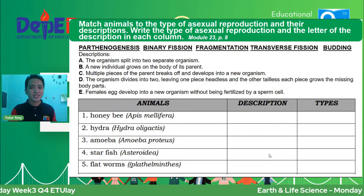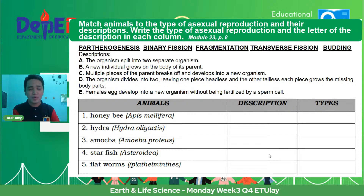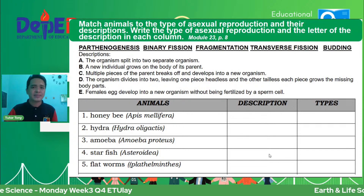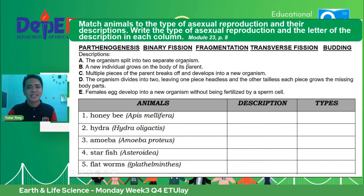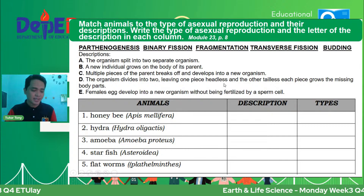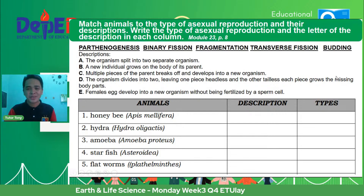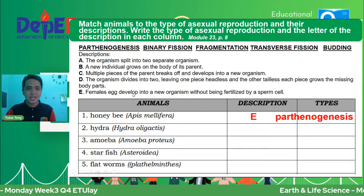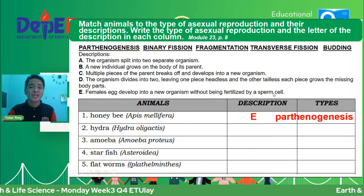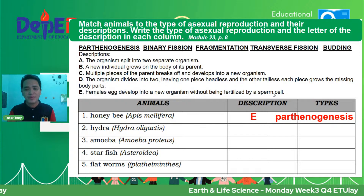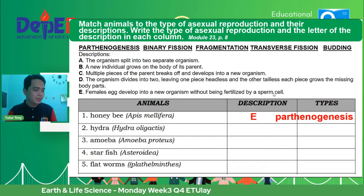Let's have a quick activity for our senior high school learners — you can take a screenshot. This is found on module number 23, page 8. Our task is to identify the mode of asexual reproduction based on descriptions given. Honeybees: females' eggs develop into a new organism without being fertilized by a sperm — that is parthenogenesis, letter E. Amazing — they have egg cells that can grow into a new organism without a sperm cell fertilizing it.